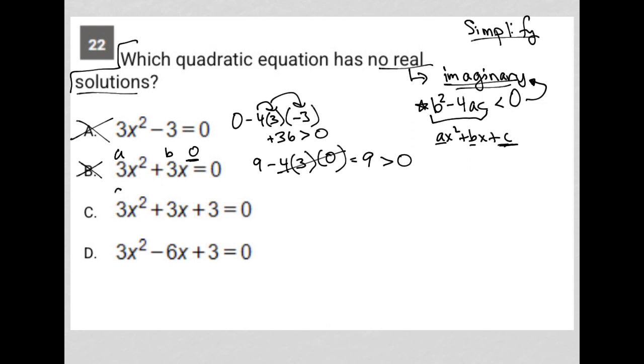Choice C. A is 3, B is 3, C is 3. So we'd have b squared is 9, minus 4. A is 3, C is 3. I end up with 9 minus 36, which is negative 27. Negative 27 is less than zero. That's exactly what I'm looking for in order for my solutions to be imaginary.